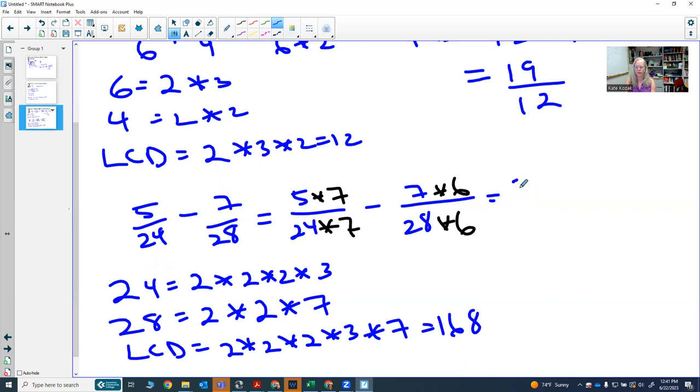So I end up with 35 over 168 minus 42 over 168. Now, in this case, I'm subtracting the numerators. So 35 minus 42 is negative 7 over that common denominator of 168.